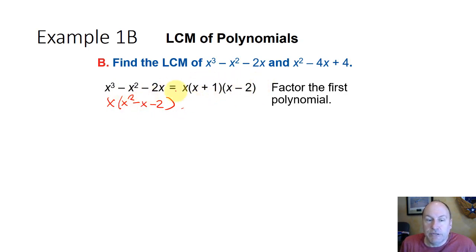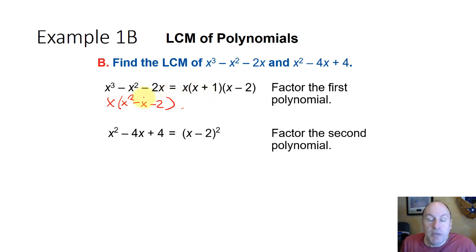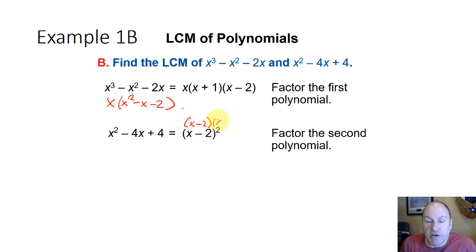So it's really a two-step process in factoring this first term. The second term, x squared minus 4x plus 4, factors nicely into x minus 2 times x minus 2, or x minus 2 quantity squared.